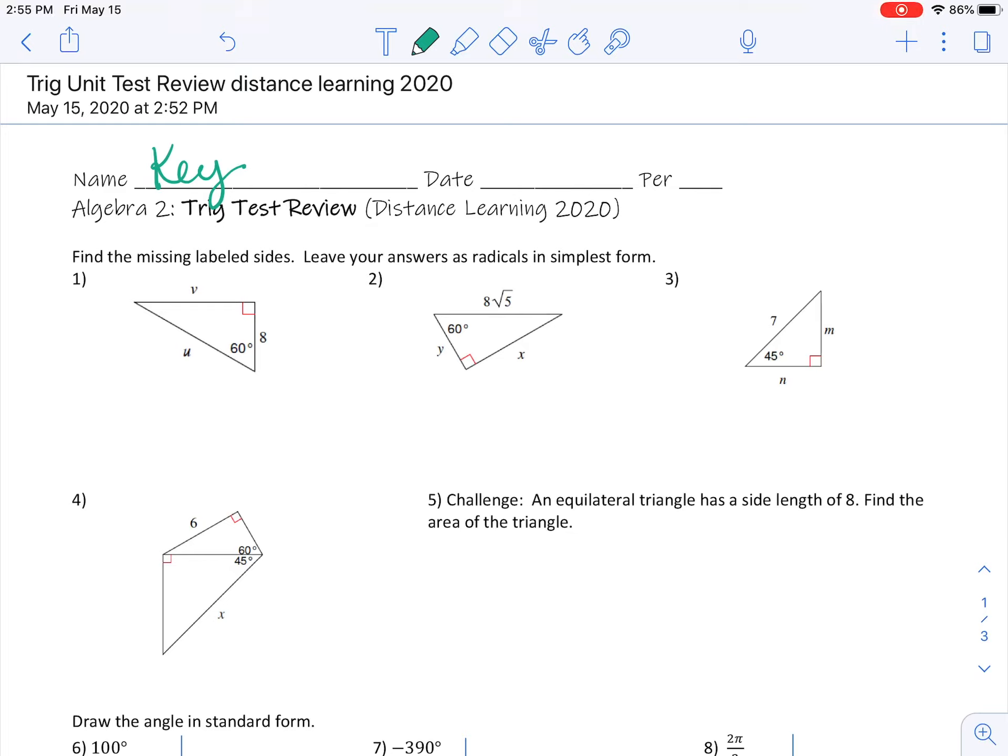So I have a 30-60-90 triangle. I know that the other angle over here is 30 degrees. Remember, opposite the 30 is going to be your shortest leg, and it's from knowing the shortest leg that you can get the other two sides. That leg gets multiplied by root 3 to get V, so V is equal to 8 root 3. And the shorter leg gets doubled to get the hypotenuse, so U is 16.